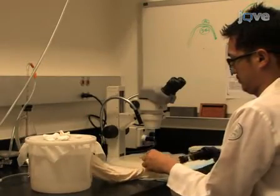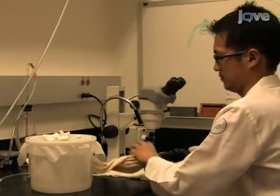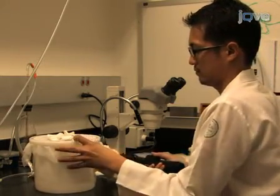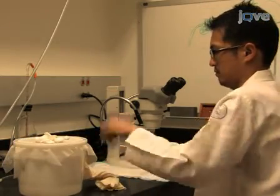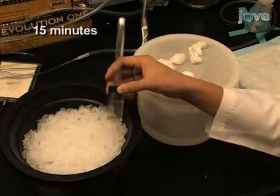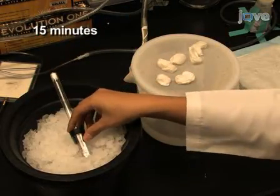Using an electric aspirator, collect 40 to 60 3 to 5 day old mosquitoes in a small plastic cage. Place the cage on ice for about 15 minutes to anesthetize the mosquitoes.